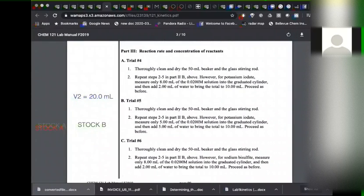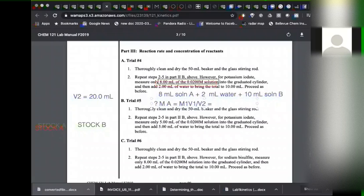Now in this second part, for trial four, we begin using less of one of the solutions, but we add two milliliters of water. So we have eight milliliters of solution A plus two milliliters of water, and then we're going to add it together with 10 milliliters of solution B. Here we're changing the concentration of solution A. So let me just do a side calculation here. What is molarity of solution A in that new volume? That's going to be M1V1 over V2. So what is that? That's eight milliliters of A times your molarity divided by what? 20 milliliters total.